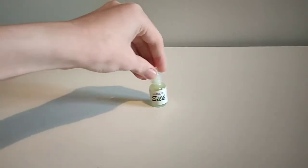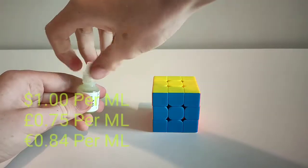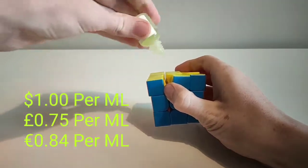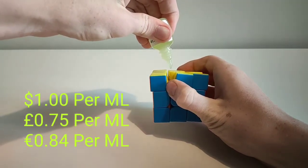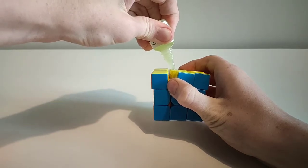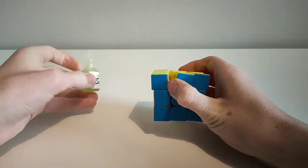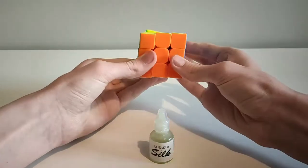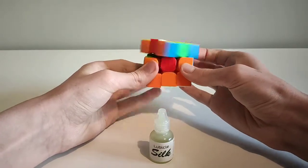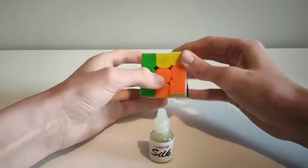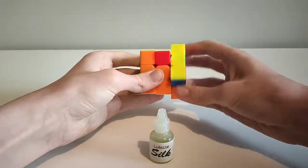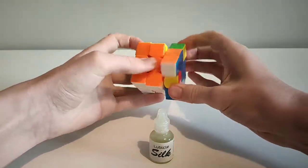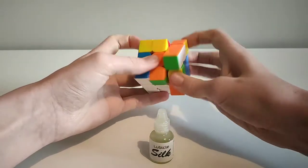Next up we have lubical silk. Lubical silk is very similar to angstrom compound X, making the cube a lot smoother. The main difference is that lubical silk slows down the cube a bit more, and also generally needs slightly more of it to get the same effect.